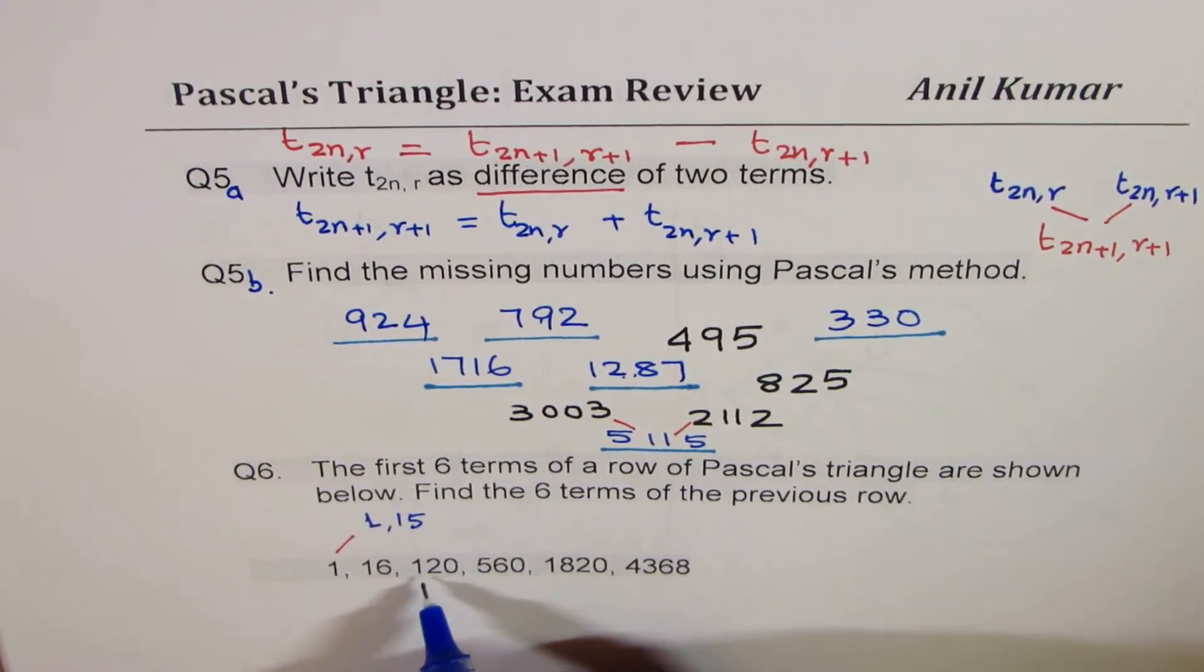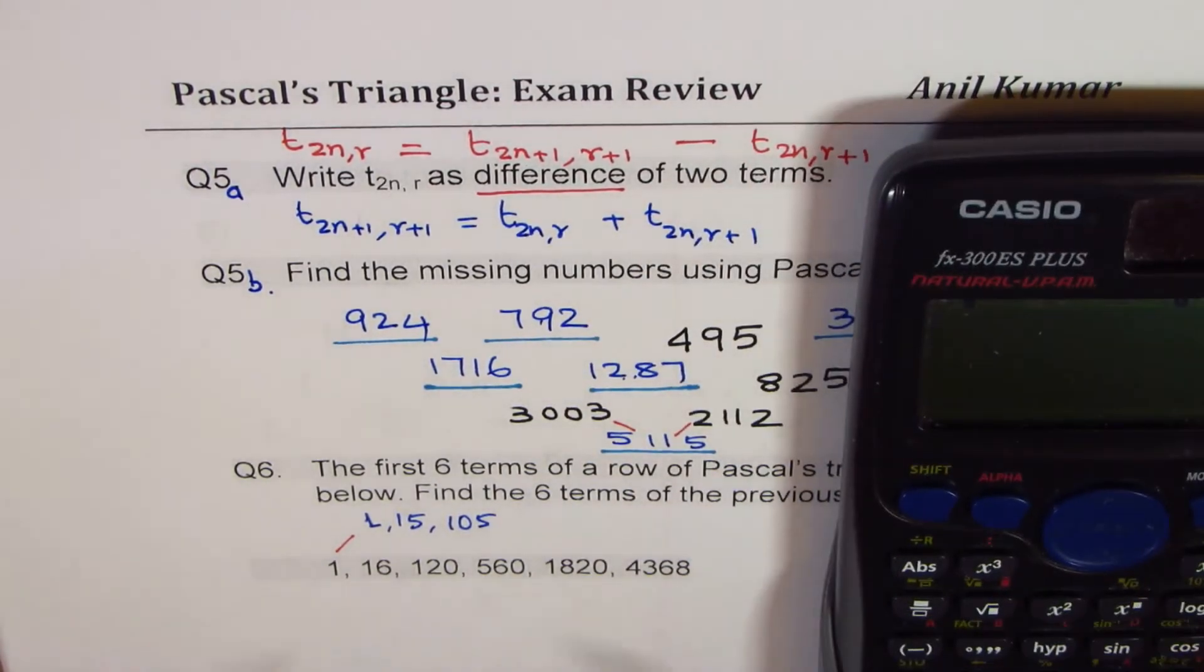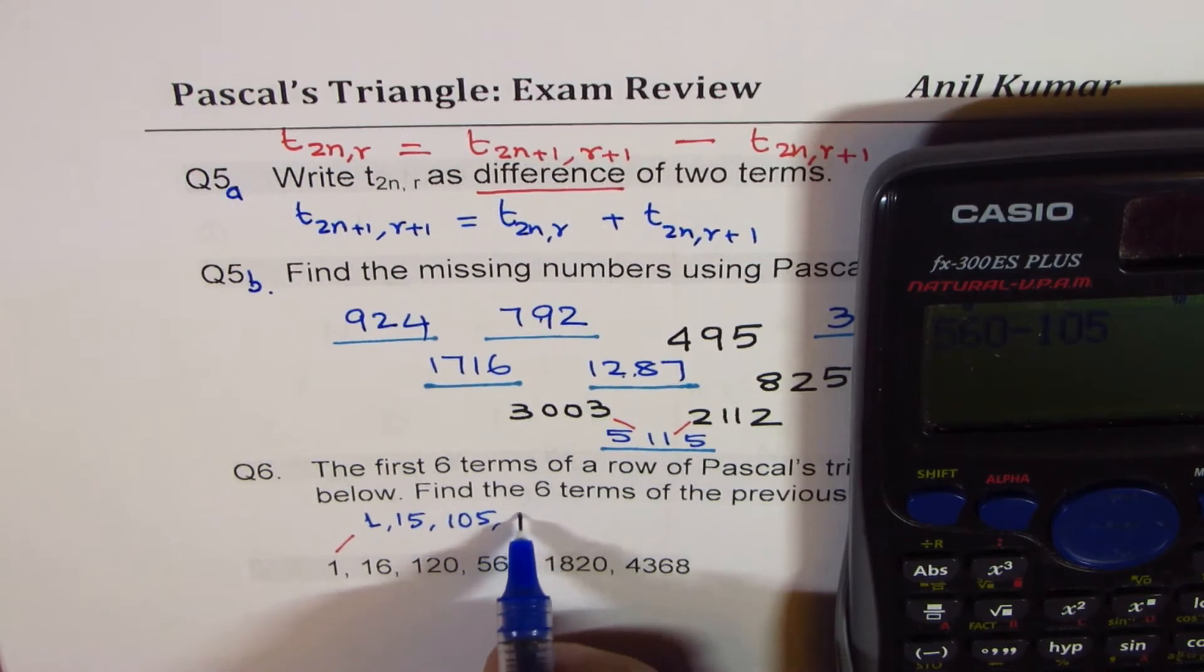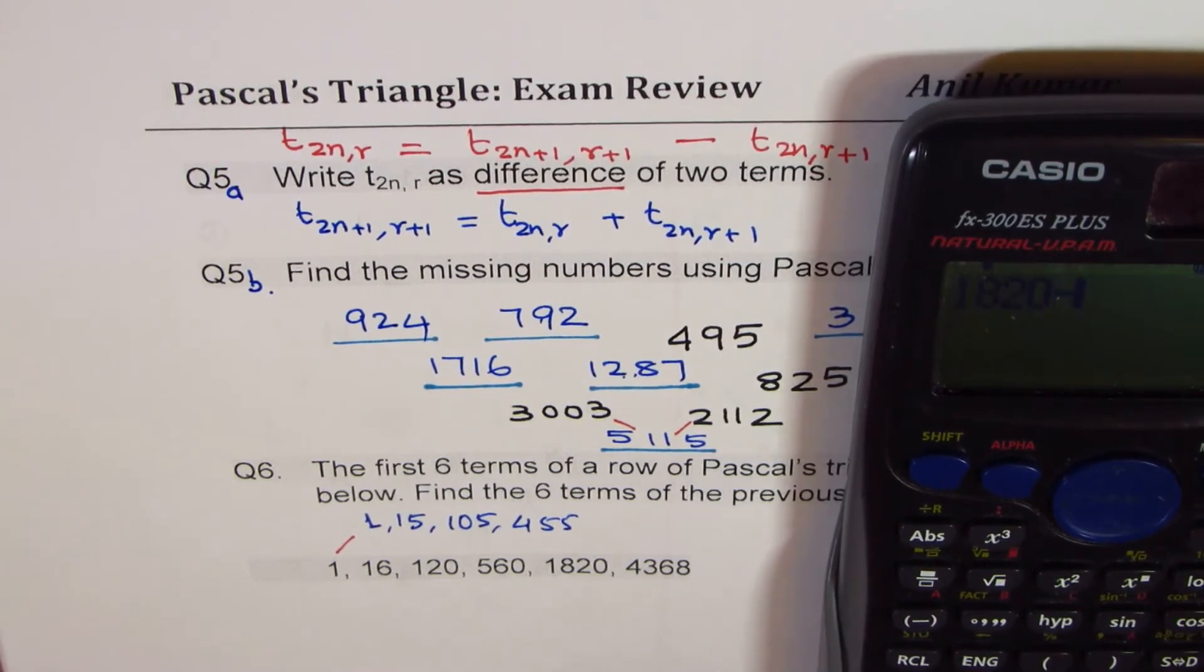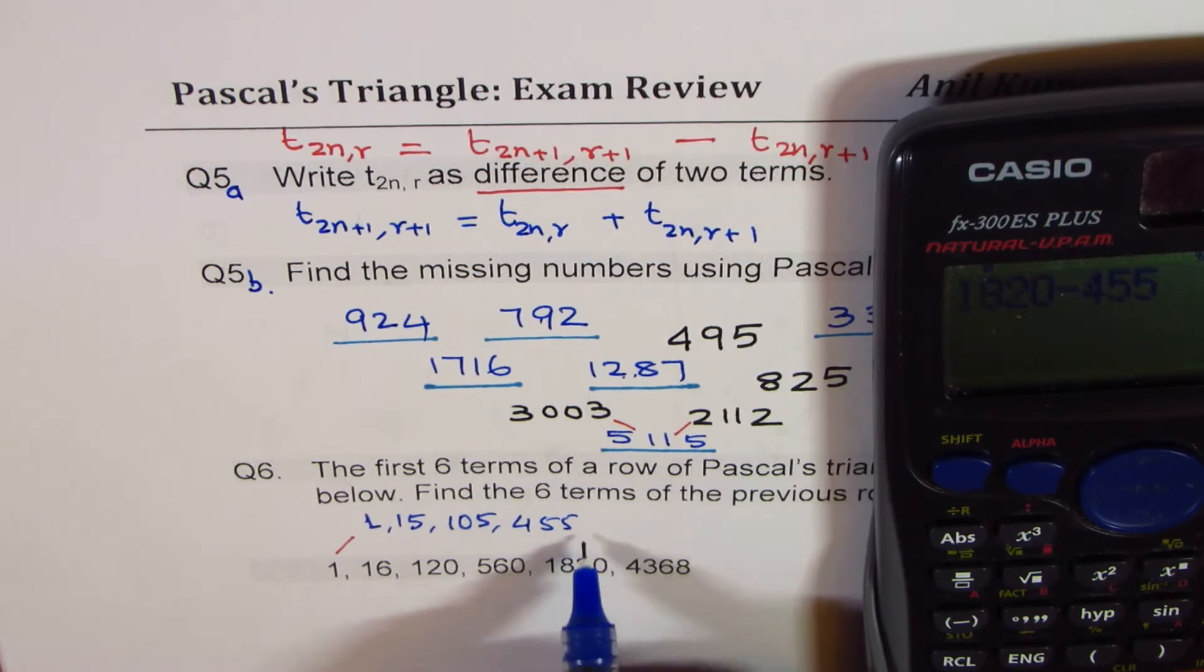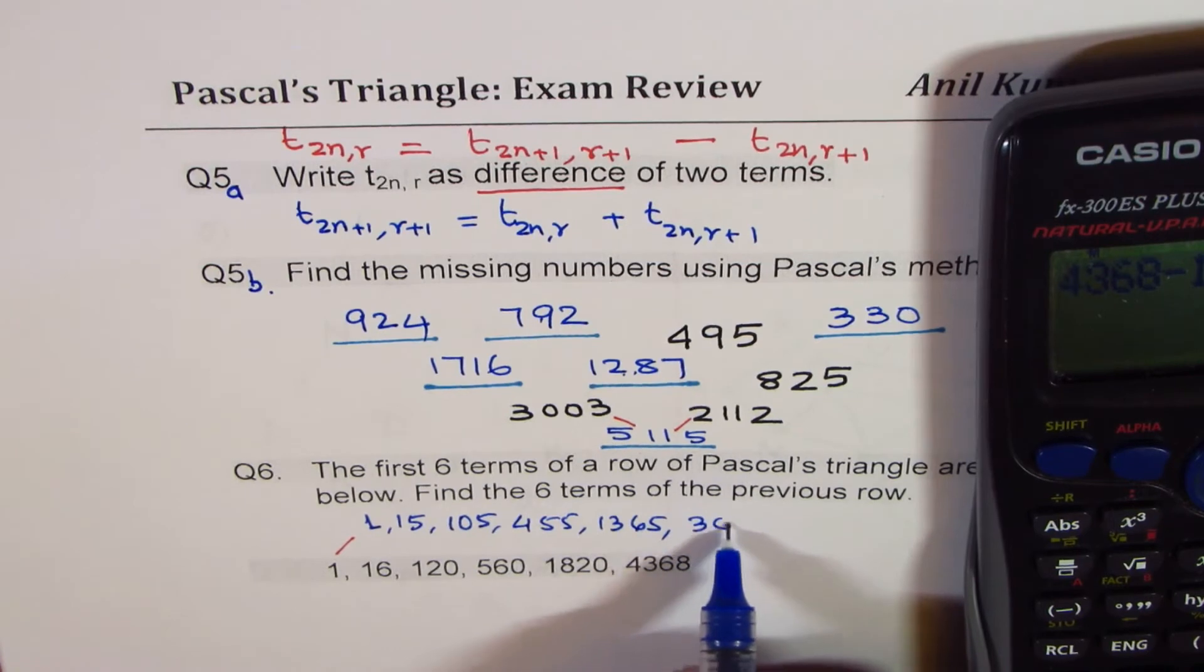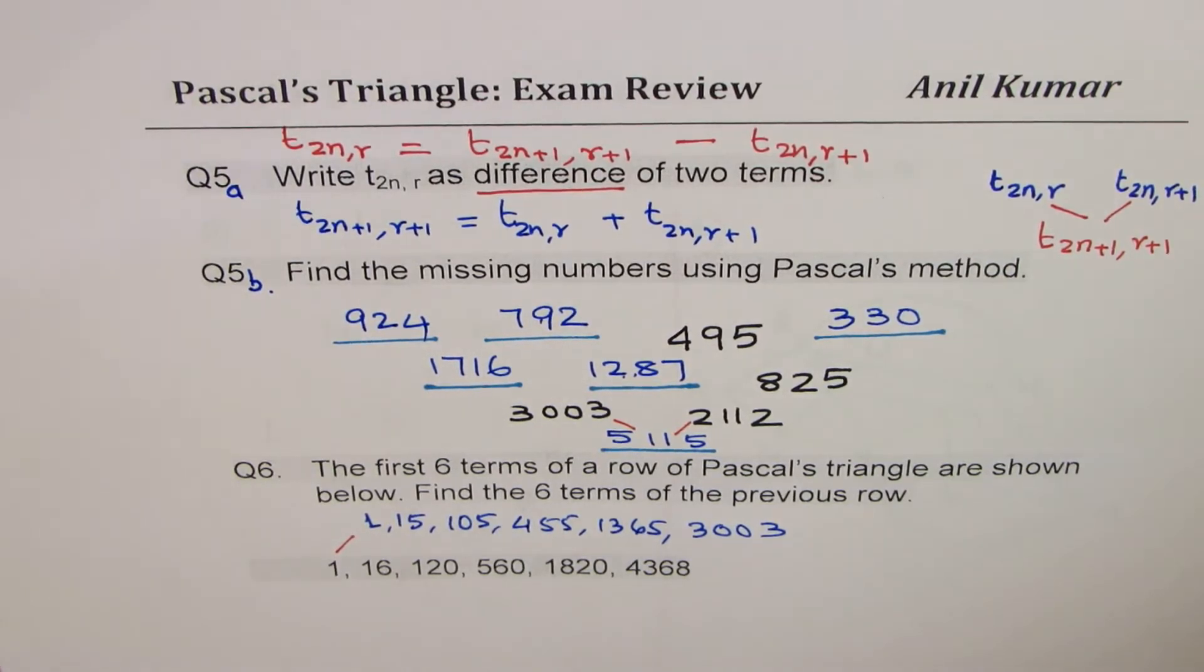Now here, I have to take away 15 from 120 to get the next number. So it has to be 105. And similarly, we'll continue. So we'll take away this number from that, which is 560 take away 105. That gives us 455. And now we're going to take away 455 from 1820. So 1820, take away 455. It gives us 1365. And now we'll take away 1365 from 4368. 4368, take away 1365, gives us 3003.